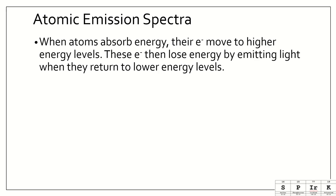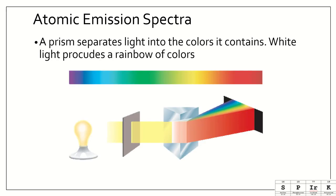When atoms absorb energy, and we talked a little bit about this before, they can absorb a quantum of energy. Their electrons move to higher energy levels. These electrons then lose energy by emitting light when they return back to lower energy levels. A prism separates light into its color that it contains. And white light produces a rainbow of colors. You see here you have your incandescent light bulb. It's passing through a prism. And we see that it separates into a continuous spectrum.